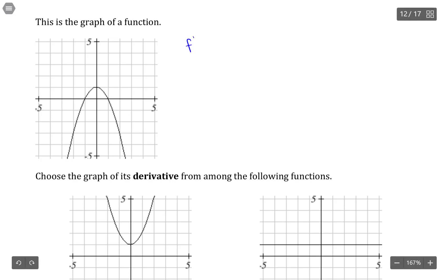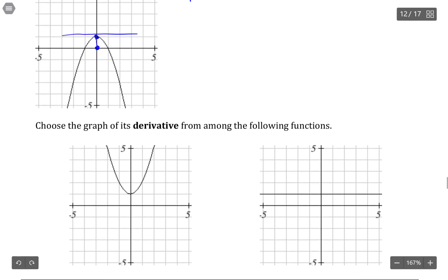So first off, the first derivative is equal to zero wherever we would have horizontal asymptotes. And so here I would have a horizontal asymptote, which means at this particular point, my derivative would have to have a zero.